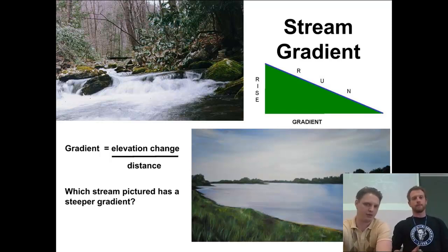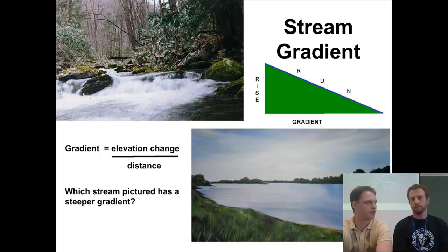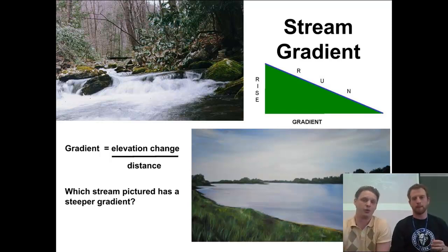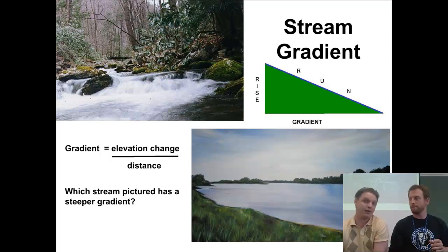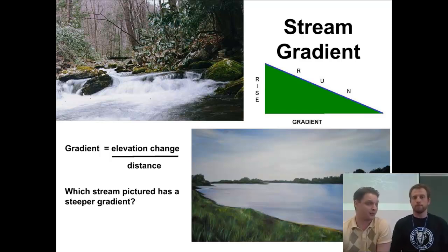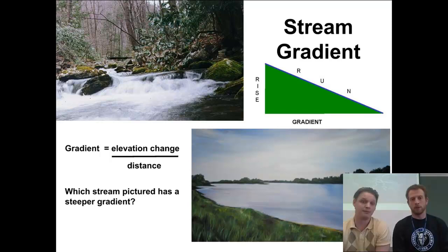Alright, the first thing we're going to talk about is stream gradient. Most of you have seen rivers at some point before, and you've noticed the water is always moving in some direction. What's causing that movement is that it is on a hill, or there's a gradient there. We measure gradient by the difference in elevation over a given distance — it's just like slope in math class.